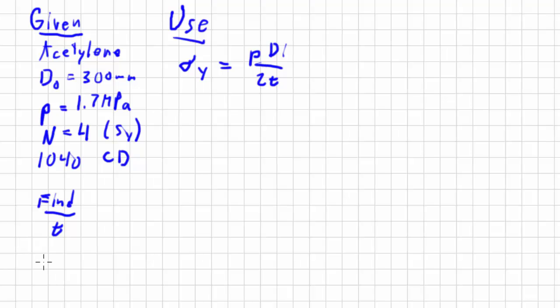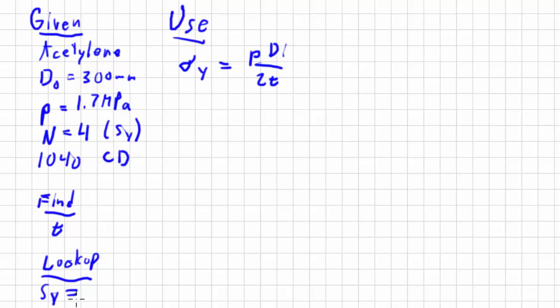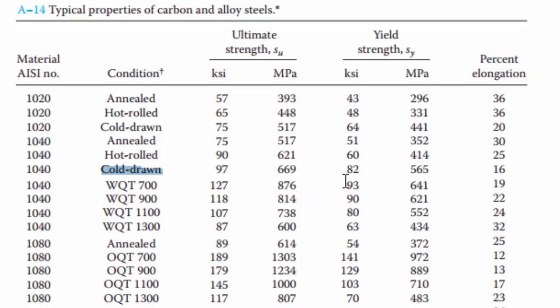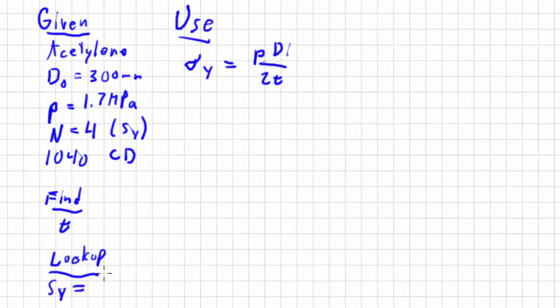So let's work with our stress here that we need to deal with. And we're going to look up the yield strength of 1040. And if we go to our textbook here, they gave our references online, which is nice. We go to 1040, cold drawn right here, and following that over to this location, we've got yield strength in the metric units of 565 megapascals. So 565. Make sure you keep those units straight.